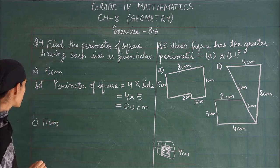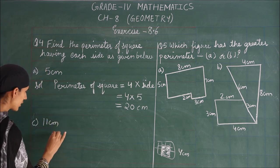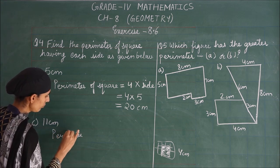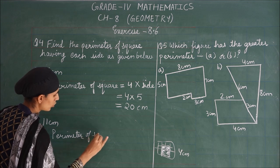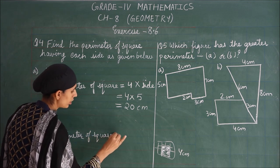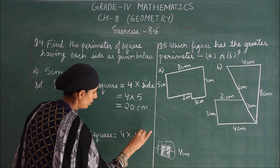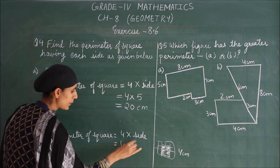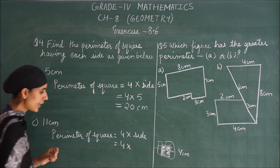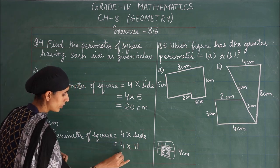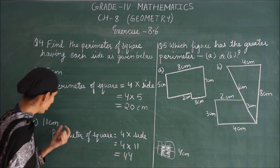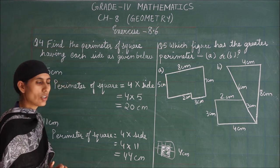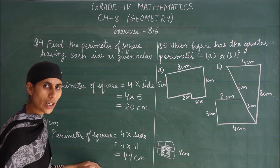Next, come to part c). Same perimeter formula: perimeter of square equals 4 times side. A square has 4 sides, so 4 multiplied by side. For part c), we have side equals 11 centimeters. Now we multiply: 4 times 11 equals 44 centimeters. You can try the remaining parts of question 4 yourself.